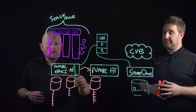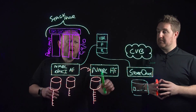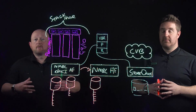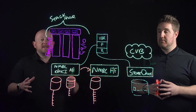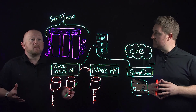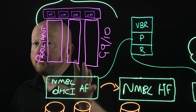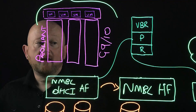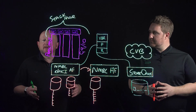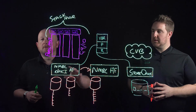Remember, all the points in time — whether they be on the primary within DHCI, out on the secondary perhaps a repurposed array, or out on a StoreOnce — all are application consistent and can be leveraged for restoration. All 60-plus different types of recovery are available from any of these locations and can be performed by an IT generalist, whether from the primary DHCI Nimble, the secondary, or the StoreOnce.